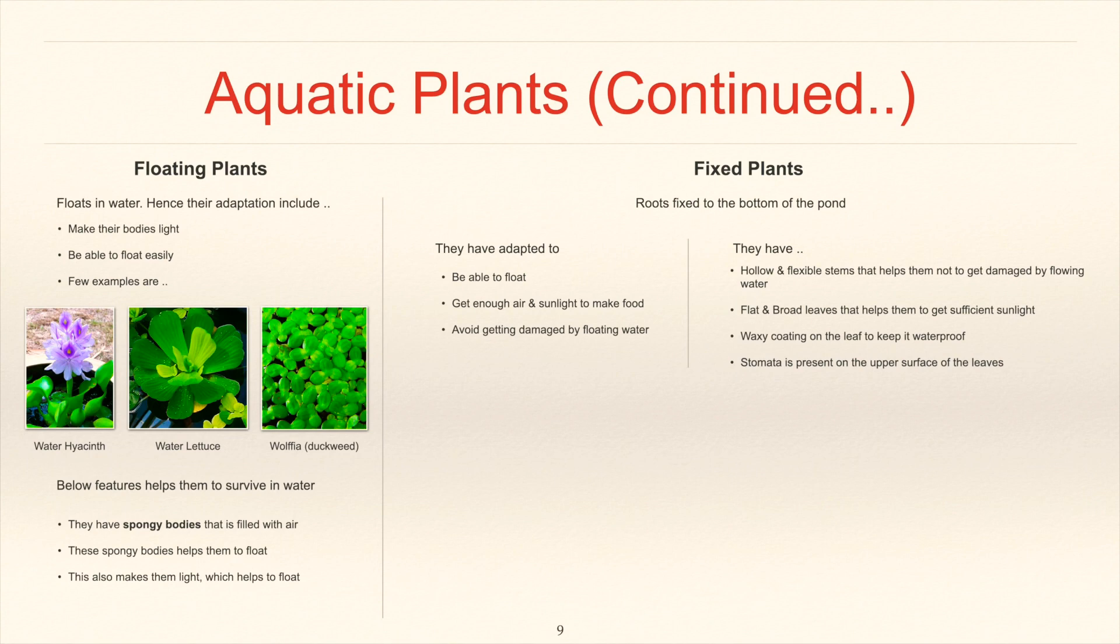To get these, they have hollow and flexible stems that help them not to get damaged by flowing water. Flat and broad leaves that help them to get sufficient sunlight. Waxy coating on the leaf to keep it waterproof. The stomata is present on the upper side of the leaves.